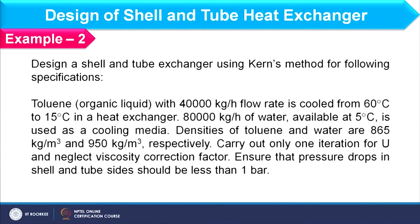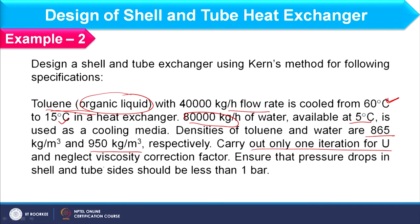If you remember the fifteenth lecture, we solved one example there, and here we will solve another example for design of a shell and tube heat exchanger based on Kern's method. This is Example 2, where toluene — considered as an organic liquid — is available at 40,000 kg/hr flow rate, cooled from 60 to 15°C in a heat exchanger where 80,000 kg/hr of water at 5°C is used as the cooling media. Density of toluene and water are given. Carry out only one iteration and neglect viscosity correction factor. Ensure that pressure drops in both shell and tube side should be less than 1 bar.